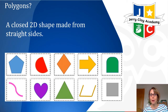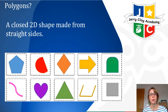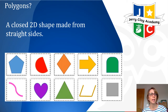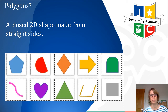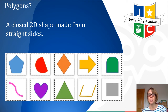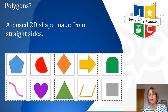A polygon is a closed 2D shape made from straight sides. Any shape that isn't fully closed is not a polygon. Shapes with a curved side — like the heart or circle — are not polygons, and a wiggly curved line is just a line, not a shape. The rest, if they are closed 2D shapes with all straight sides, are polygons. A triangle is a type of polygon — a closed 2D shape with three straight sides.